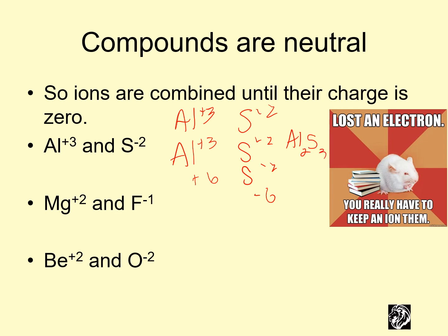Mg and F. If we get another F, then we have MgF2. That and that give us zero, so they combine as BeO.